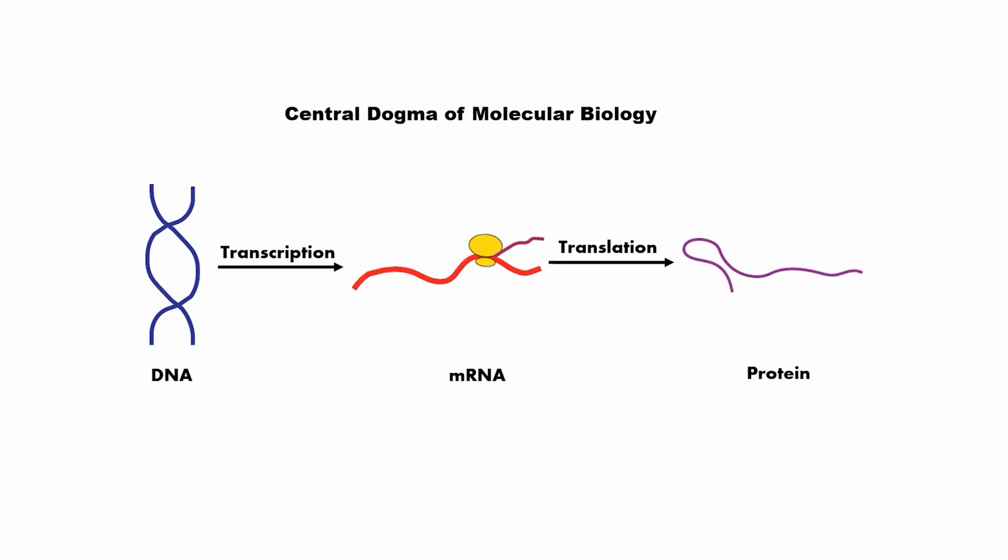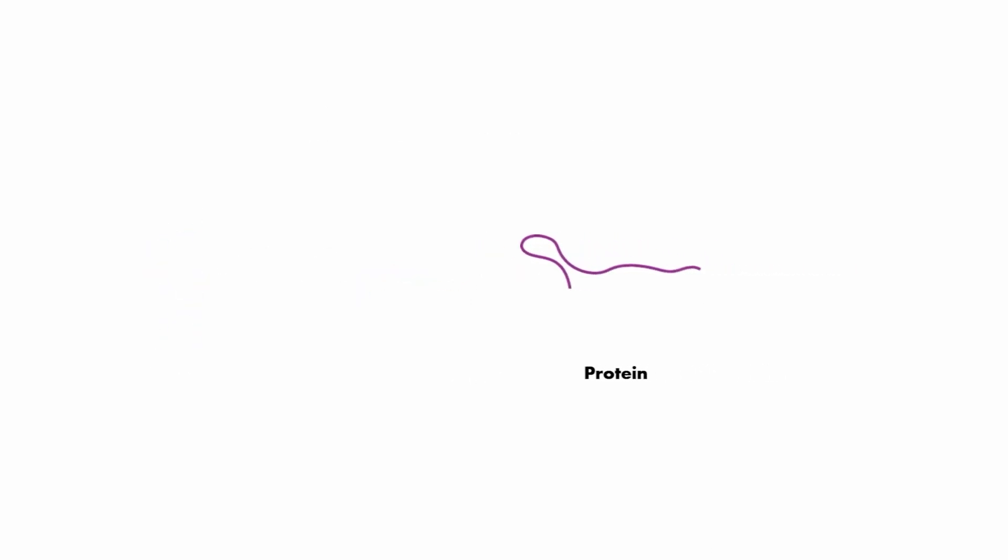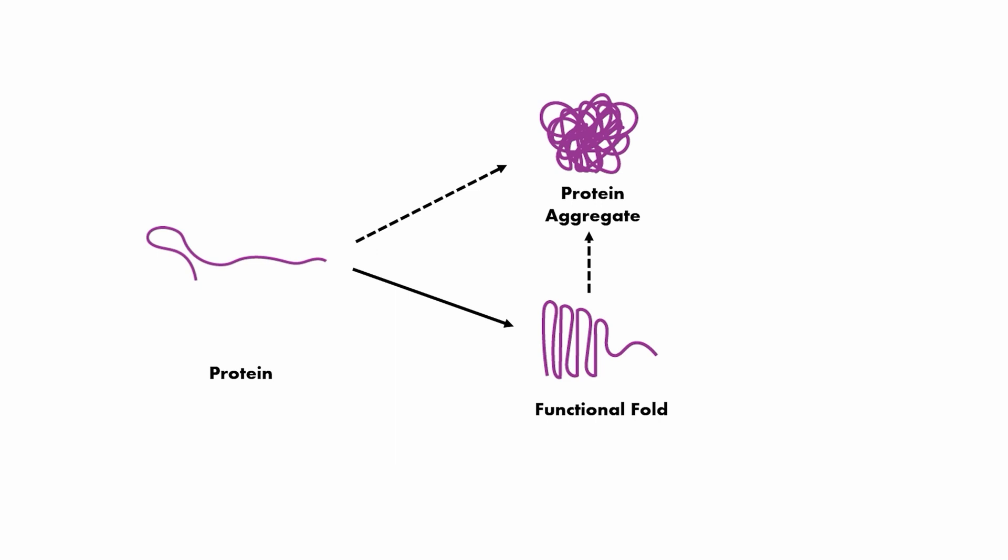In order to function properly, all proteins need to acquire a particular conformation. We call them protein structures. Sometimes for multiple different kinds of reasons, proteins cannot achieve their functional structures, and then we call these proteins misfolding and forming aggregates.